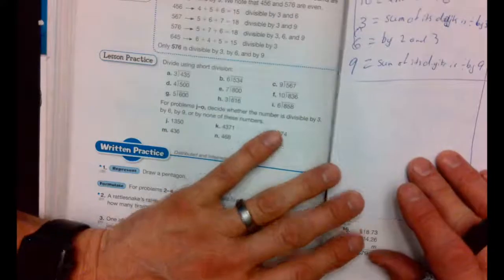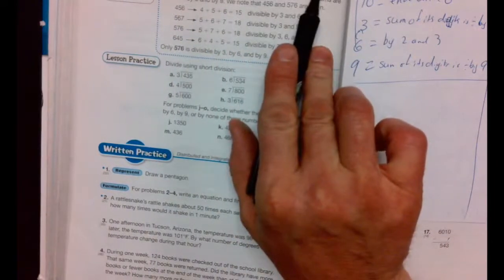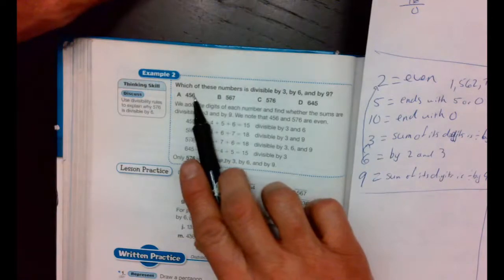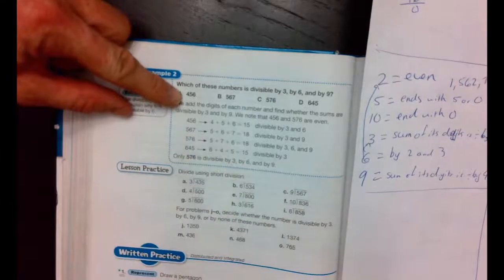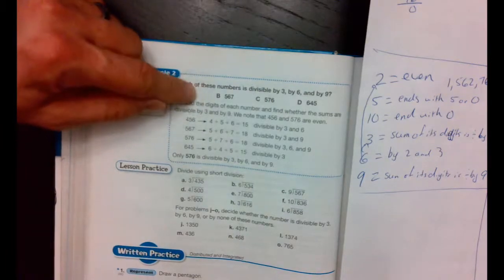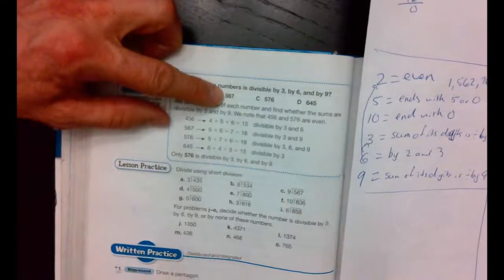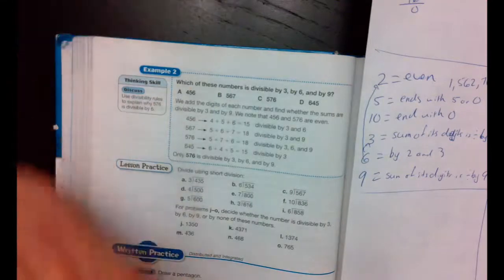Well, here's the example for that one. In our fifth box, it says, which of these numbers is divisible by 3, 6, and 9? Well, let's break this one apart. 4. Sorry. 4 plus 5 is 9, plus 6 is 15. Is 15 divisible by 3? Yes. Is 15 divisible by 9? No. So this one's out. Now, how about this one here? 5 plus 6 is 13, plus 7 is 20. Is 20 divisible by 3? No. That one's out.